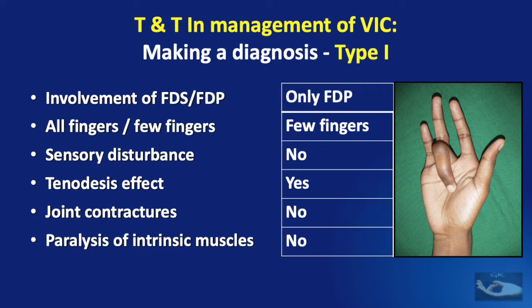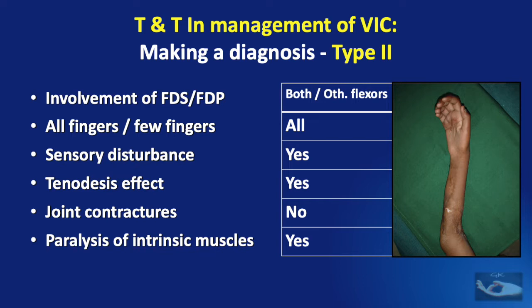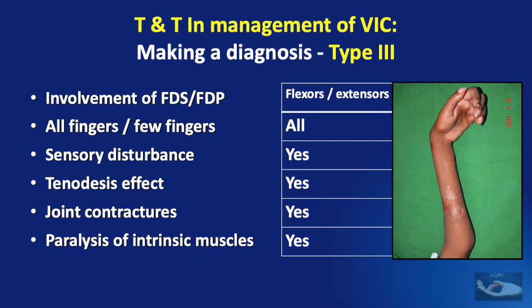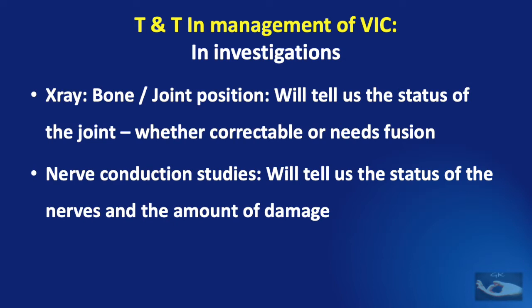If it involves the FDS and FDP of all fingers, and sometimes other flexors like the wrist flexors, with sensory disturbance, tenodesis effect, and paralysis of intrinsic muscles but no joint contractures, it is a Type 2. In addition to all the above features, if there are joint contractures too, it falls under the Type 3 category of VIC.